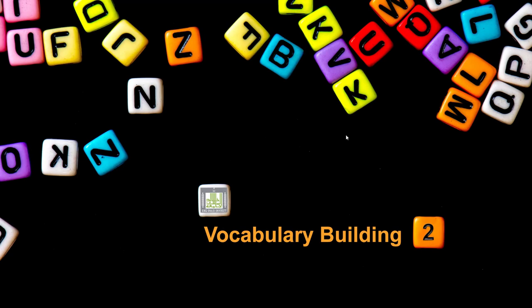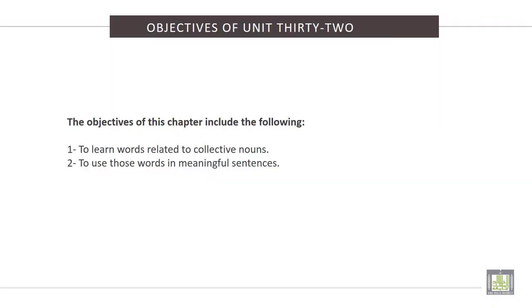Vocabulary Building 2, Unit 32: Collective Nouns. The objectives of this chapter include the following: 1. To learn words related to collective nouns. 2. To use those words in meaningful sentences.